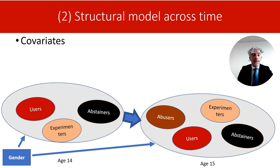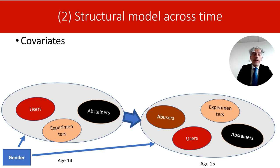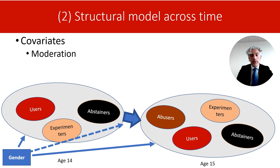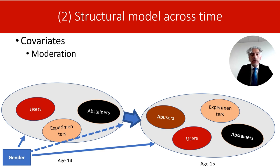Furthermore, latent transition analysis allows us to investigate the role of covariates. For example, is gender associated with latent class affiliation at age 14? Do females vary in the probability of being abstainers compared to males? And do females and males vary in their membership at age 15 once we control for membership at age 14? As I will illustrate in the third presentation, latent transition analysis can also provide answers to more complex questions — for example, whether the transition probabilities vary by gender, and whether females and males display different patterns of change across time.